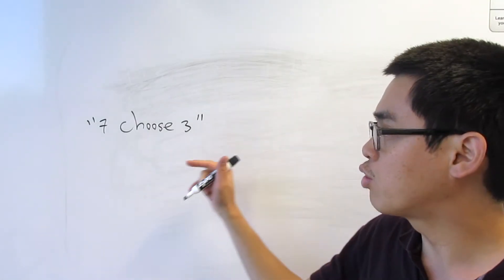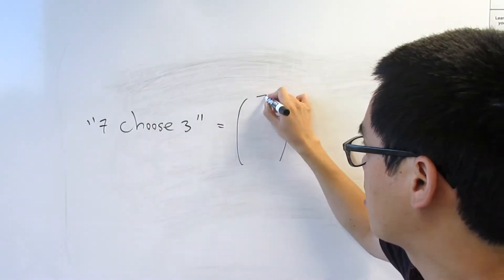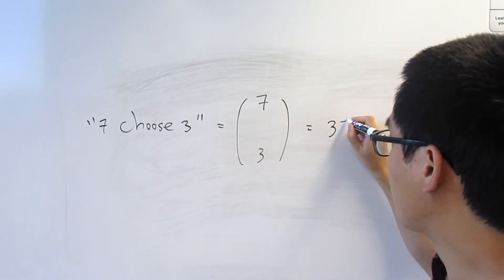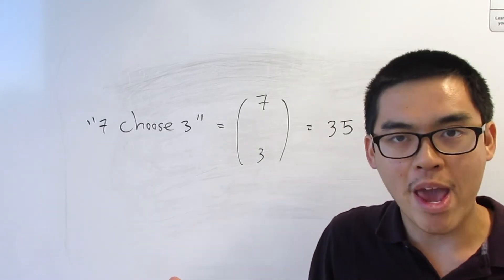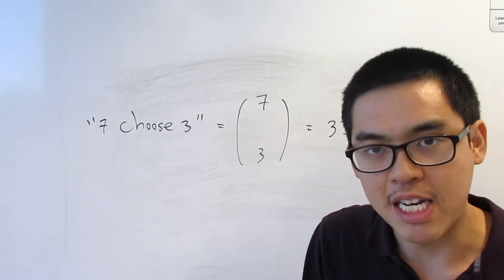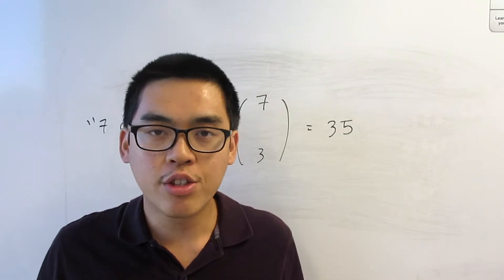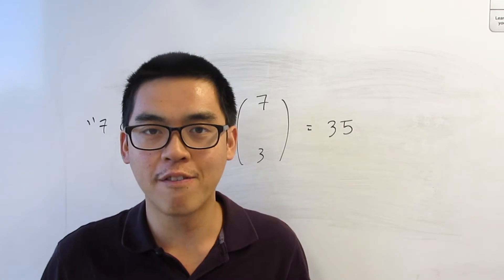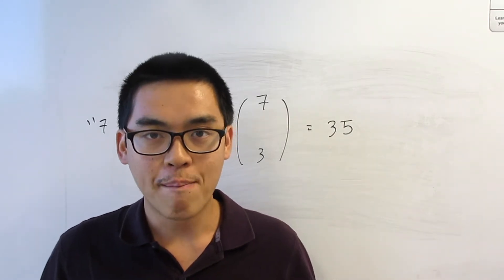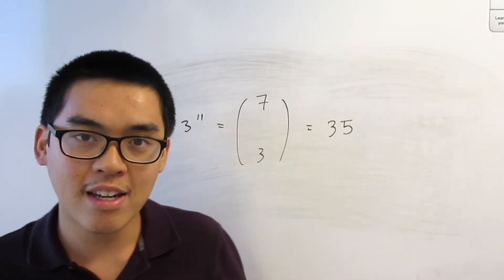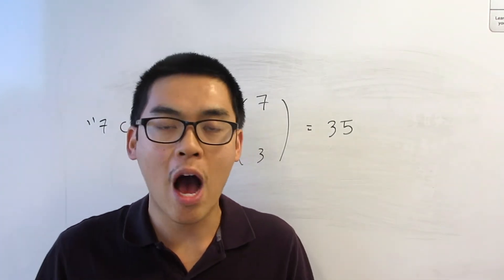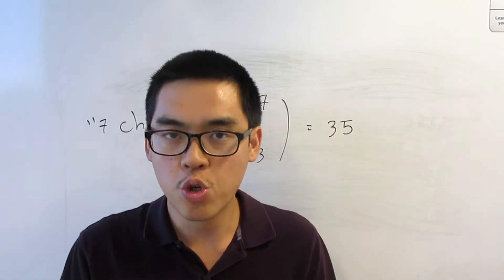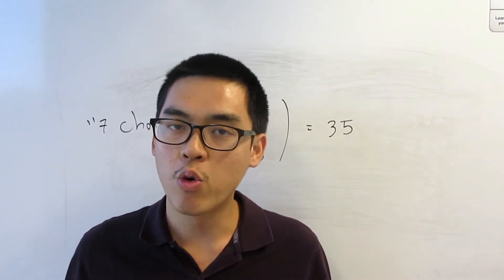Notation-wise, we write seven choose three and the answer is thirty-five — there are 35 ways to pick three numbers out of seven. If you're adventurous, you can try to compute eight choose three, eight choose four, or ten choose five by yourself. But it's going to be very tedious to list everything out like I did — that's why we have a formula.